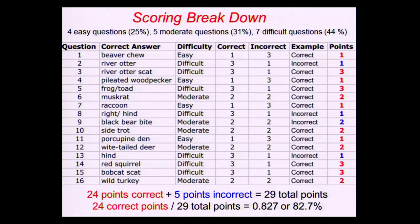Here's how you do the scoring: add up all the points you got as correct answers, and then add up all the points from incorrect answers. Add all your negatives as one total, all your positives as one total. Add those together, and then divide the points you got correct by that combined total. That's your score percentage.